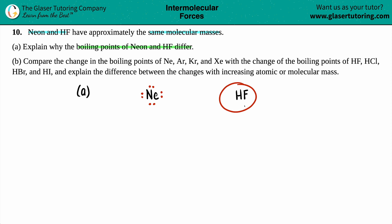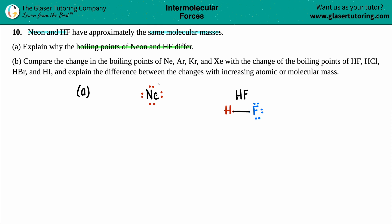For HF, we draw hydrogen on the left and fluorine on the right, then place the Lewis valence electrons around each atom. Fluorine has seven valence electrons and hydrogen has one. Connect them and that's the Lewis structure for HF. Neon is just sitting by itself. Both are covalent since we're dealing with non-metals.